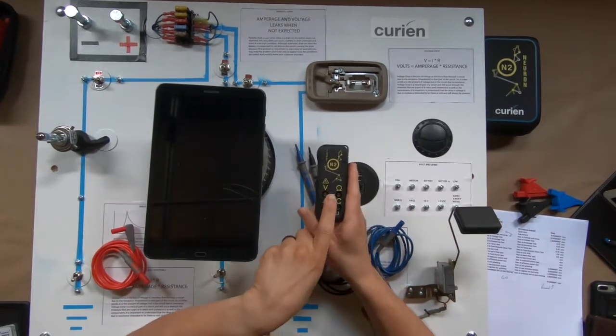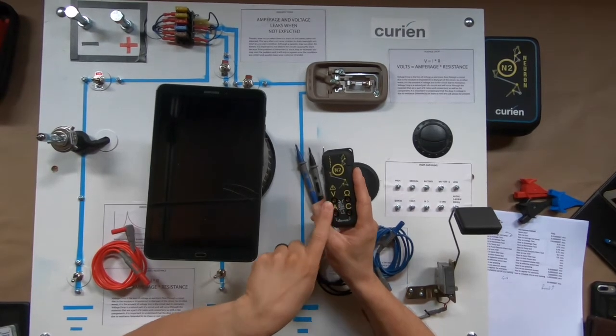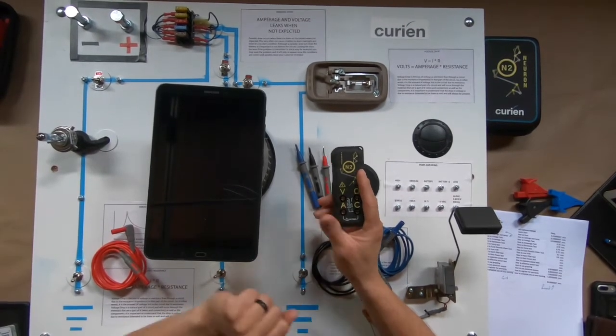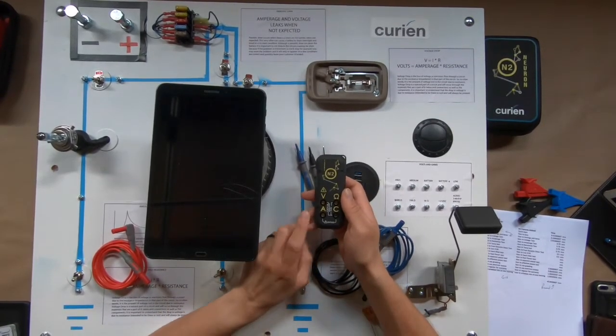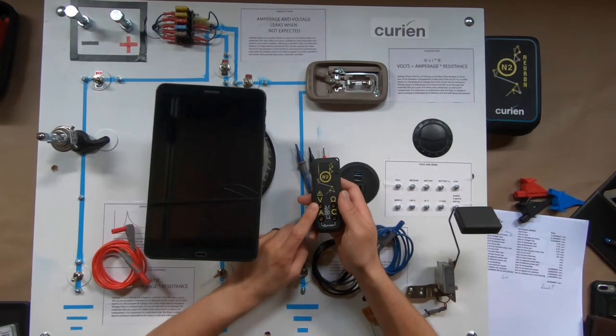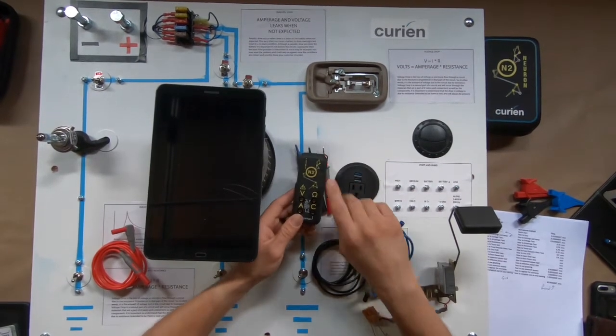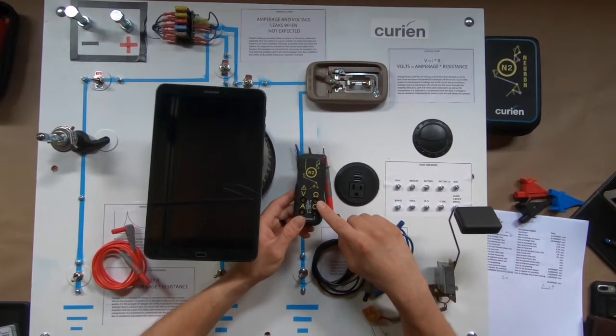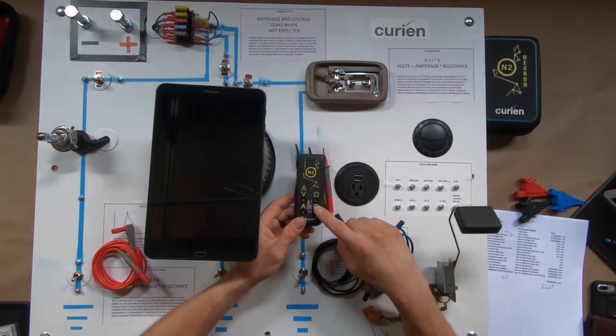As you can see here we have our four ports: common, amps, resistance and voltage. What we have on here are two volt meters. We have our full AC DC volt meter up to 600 volts CAT 3, and we have our precision volt meter here between common and ground and it can read up to two volts DC or down to negative two volts.